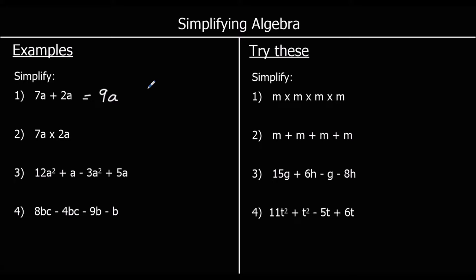Question 2 says 7a times 2a. 7a means 7 times a. 2a means 2 times a. So we've actually got 7 times a times 2 times a. But we don't write the times signs in algebra. We can simplify this by multiplying the 7 and 2 together. So we can change the order. If we switch this 2 and this a around, we can say that's the same as 7 times 2 times a times a. 7 times 2 is 14. And a times a, we can write as a squared.